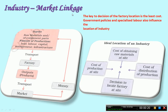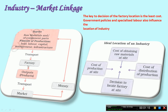Industry-market linkage: how do the industry and market interlink together? You can see in this diagram that inputs like raw material, other component parts, and factors of production — land, labor, capital, entrepreneur, infrastructure — are connected to the factory through transport. Whatever output comes from the factory again goes through transport to the market. All these are interlinked through money, which links all the different stages of industry.